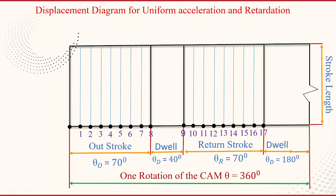For the outstroke, consider the middle line at division four. This line is divided into the same number of eight divisions and assigned names one prime, two prime, three prime, four prime, five prime, six prime, seven prime, and eight prime. The first four points — one prime through four prime — are connected to the lowest corner point (zero), and the top four points are connected to the top corner point. Join these points to the corner points with straight lines.